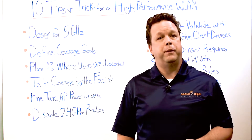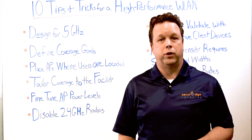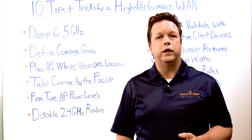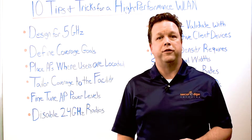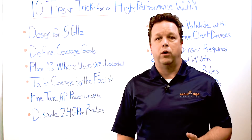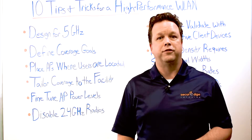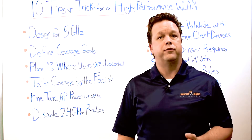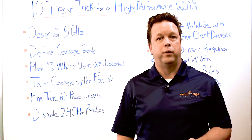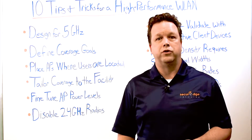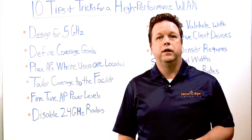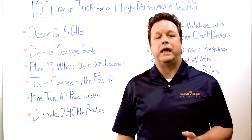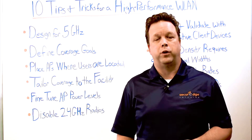We also recommend placing APs where users are located. In-room placement is best for client performance. Avoid hallways if at all possible unless required for voice roaming or location tracking. The idea is to get the APs closest to where the devices are being used.